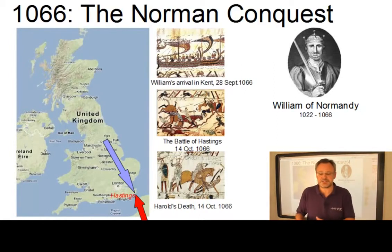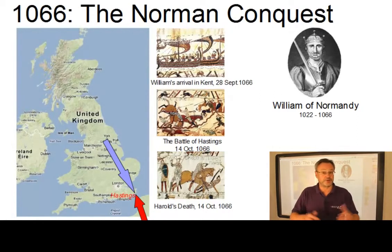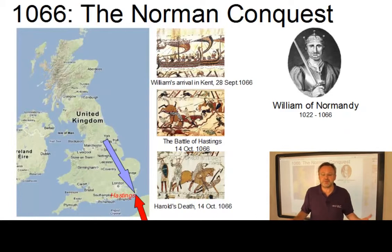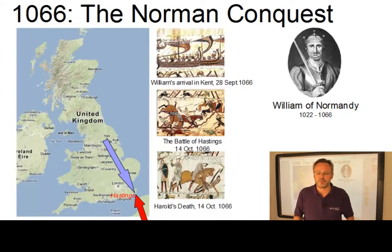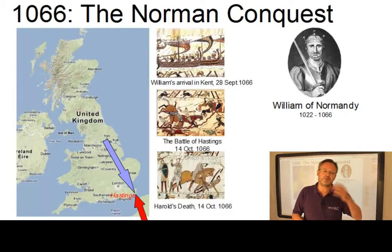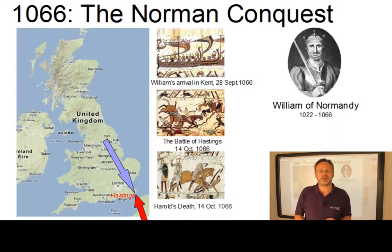The Norman conquest itself continued until 1069. And under Norman rule, French became the official language of the kingdom. So by 1100, the Old English period, or more precisely, the Anglo-Saxon dominance, came to an end.